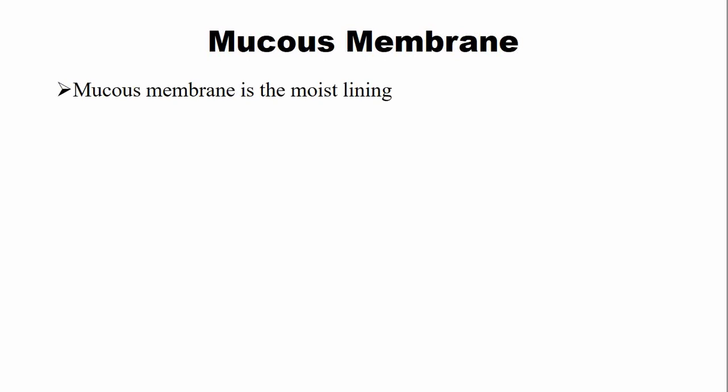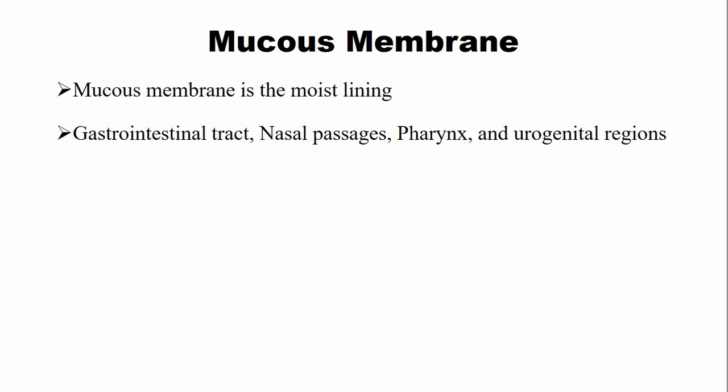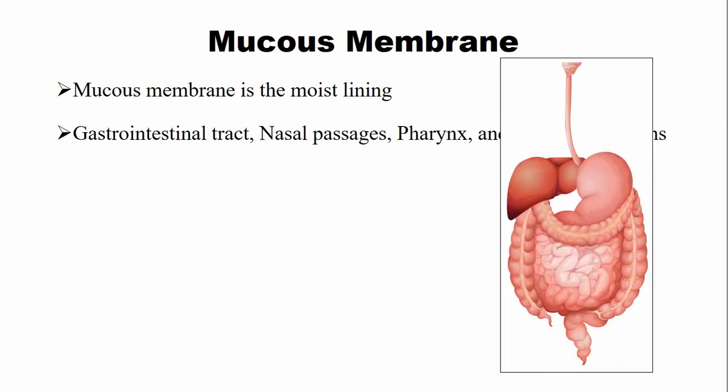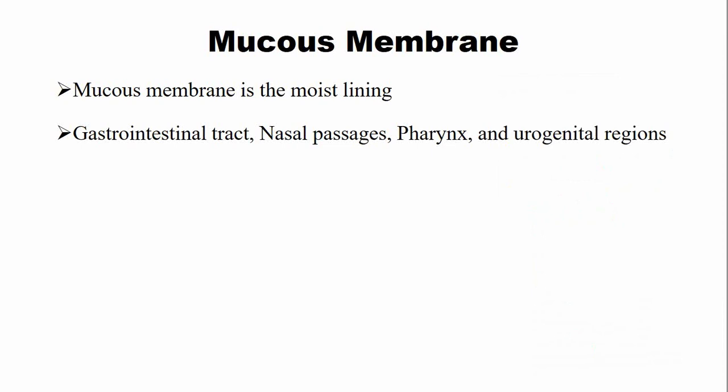Before starting oral mucosa, it is important that you understand the concept of the mucous membrane. The mucous membrane is a moist lining, and this moisture is because of the presence of mucus-secreting cells associated with the membrane. The mucous membrane lines the gastrointestinal tract, as well as the nasal passages including the maxillary and paranasal sinuses, pharynx, and the urogenital regions. They are all lined by the mucous membrane, which contains goblet cells that keep the lining moist.